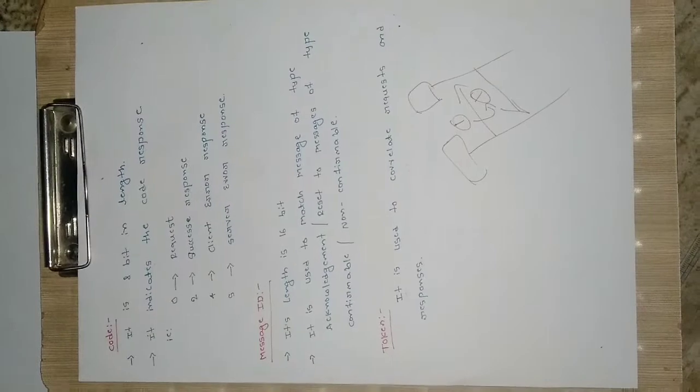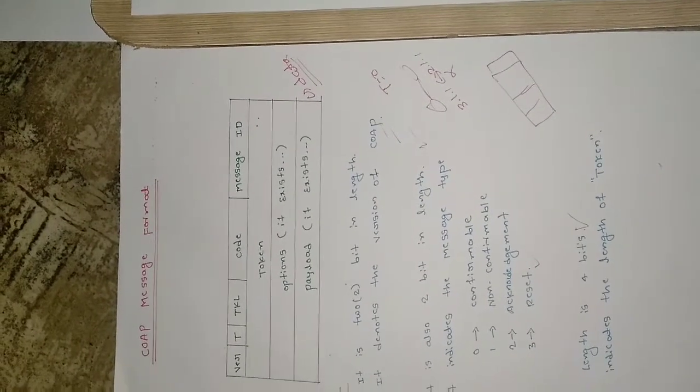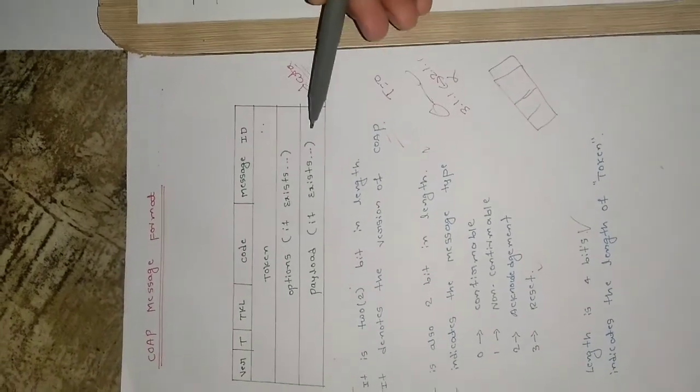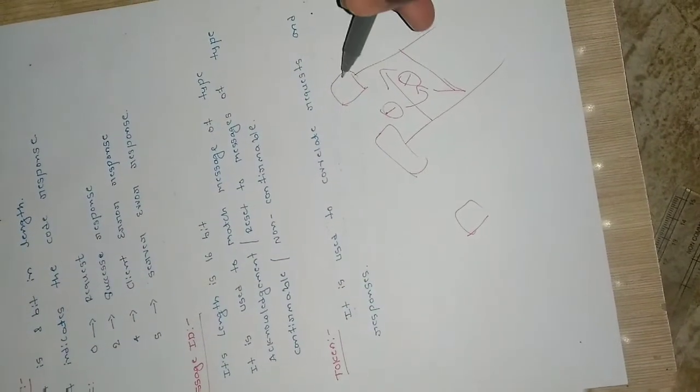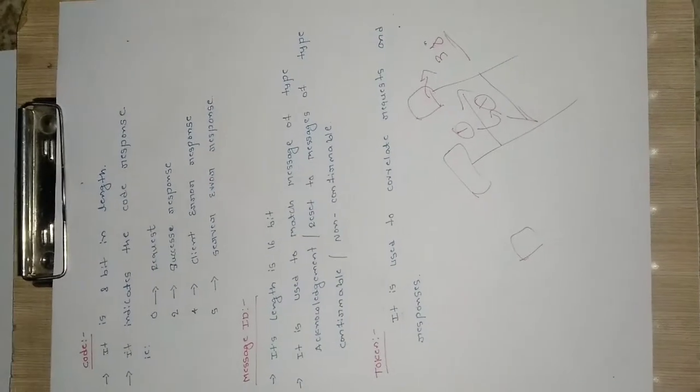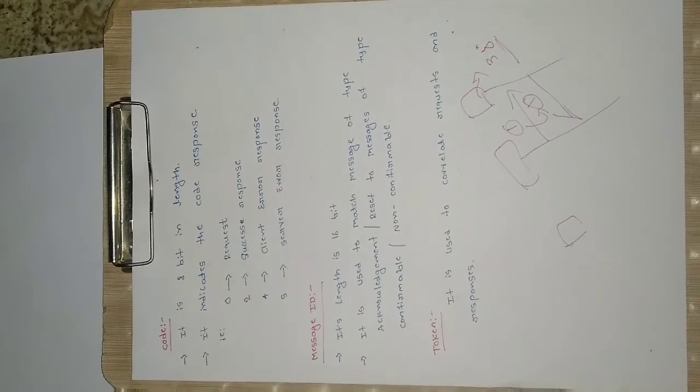That's all about the CoAP message format. The options field is there if you need something extra and is reserved for now. The payload, as already mentioned, is the actual data you want to transfer — for example, if a client wants to know the temperature at a particular point, that temperature value will be the payload sent to the server. Thanks for watching — see you in the next video. If you are new to the channel, please subscribe and hit the like button.